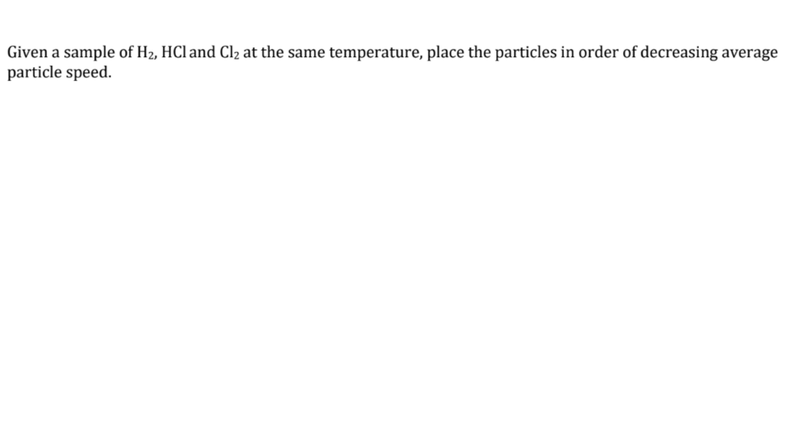Given a sample of H2, HCl, and Cl2 at the same temperature, place the particles in order of decreasing average particle speed. So that means it wants to go from fastest to slowest. Since all have the same kinetic energy because they're at the same temperature.